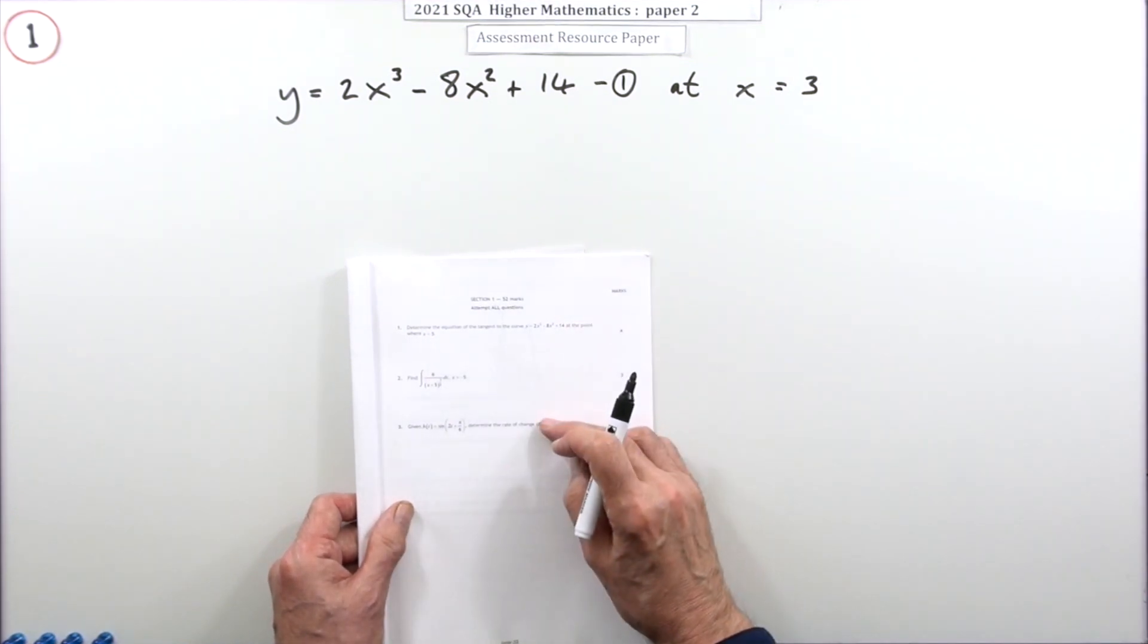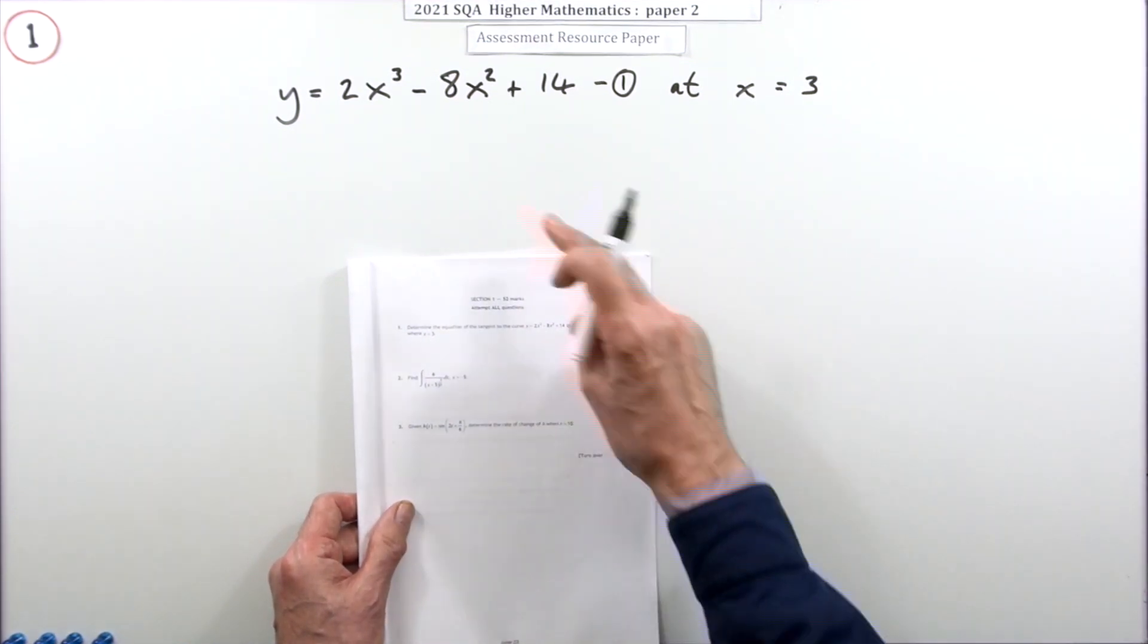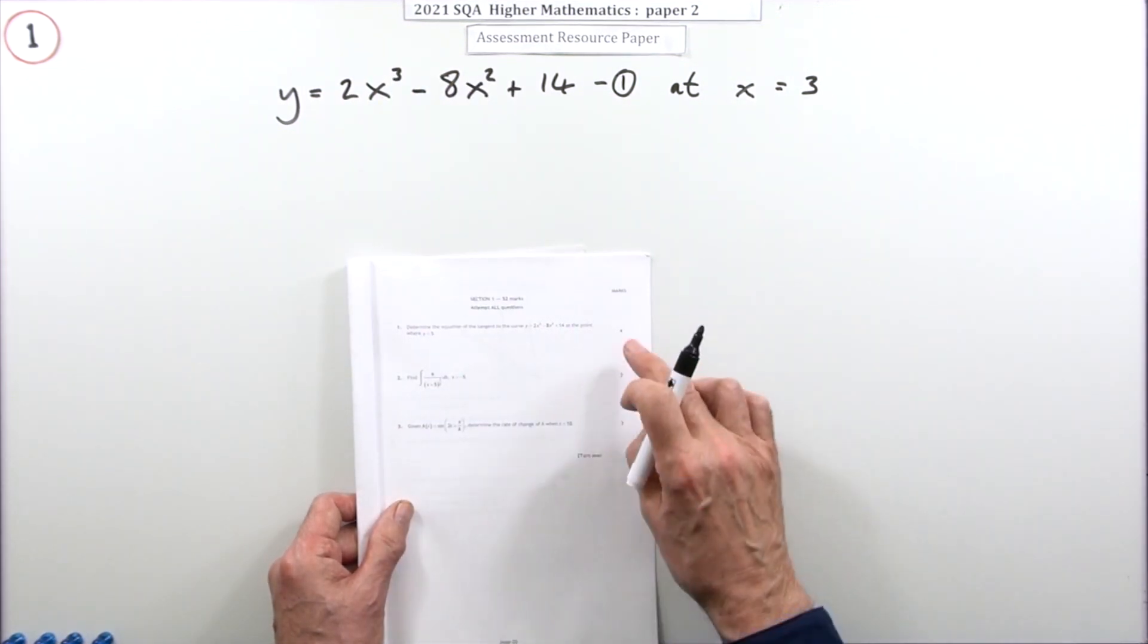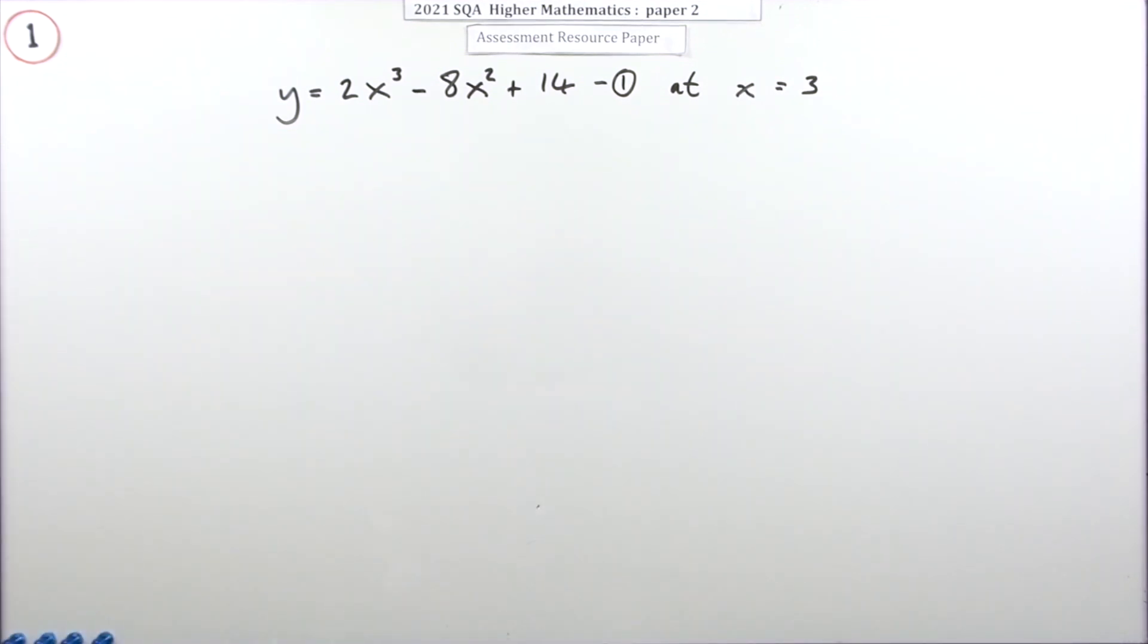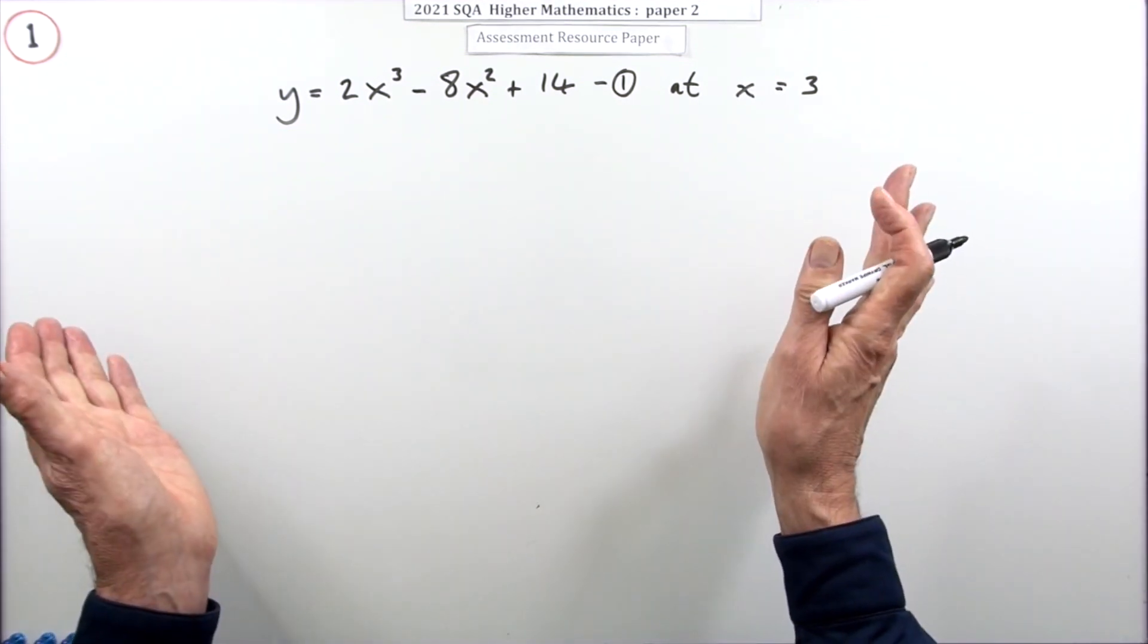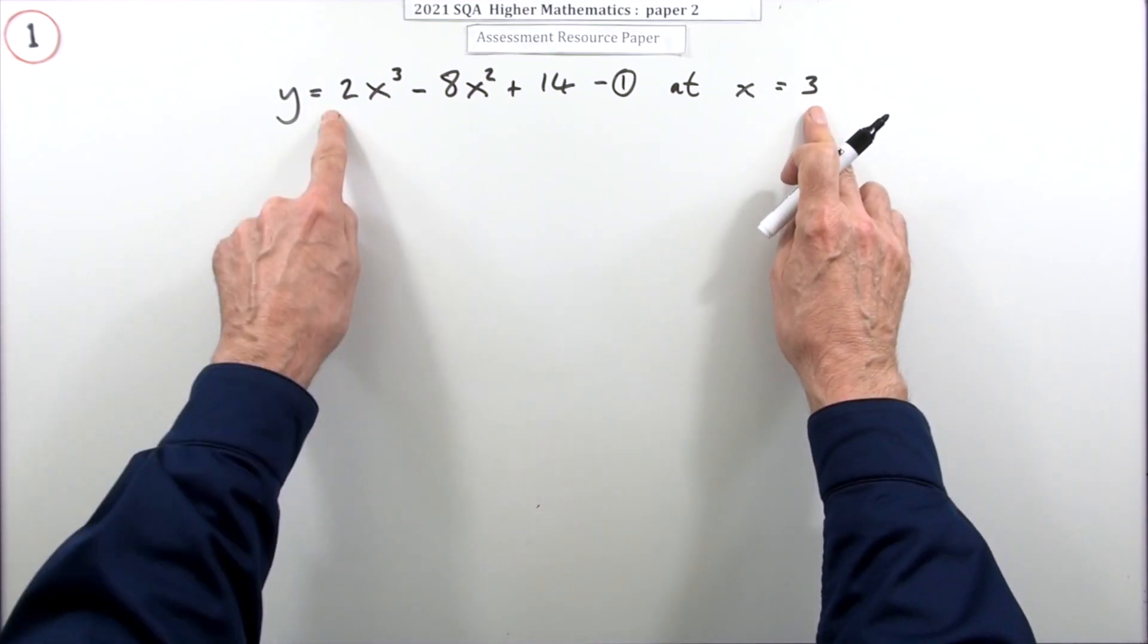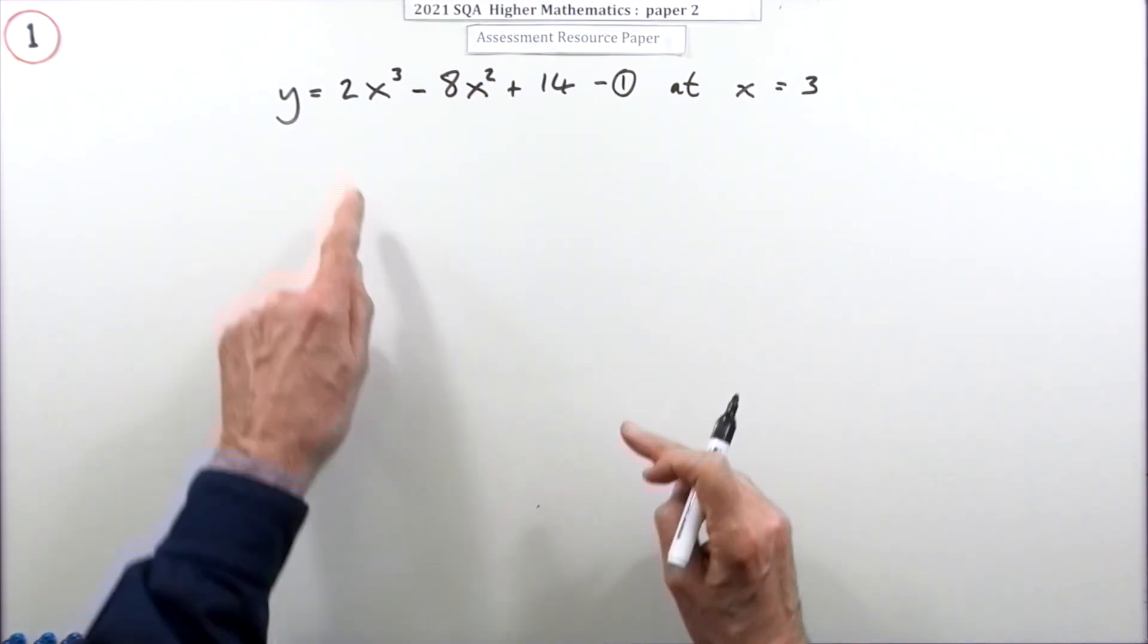Standard - what's the equation of a tangent to a curve? The curve's got this equation, what's the tangent to that curve at the point where x is three, for four marks? Well, tangent - that's a straight line. The equation of a straight line needs a point on it, get that from this equation, and its gradient, I'll get that from the derivative.